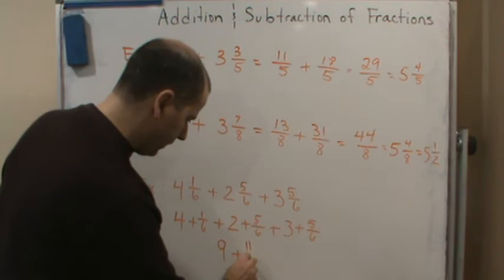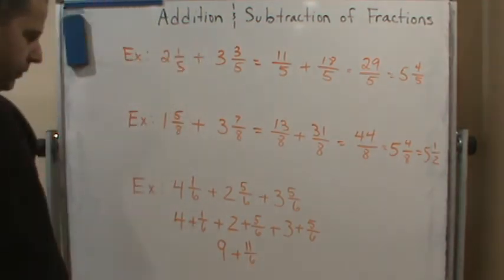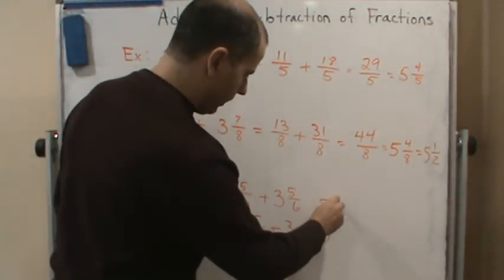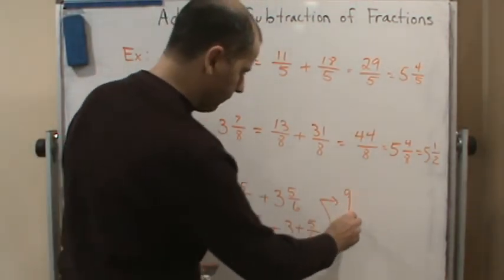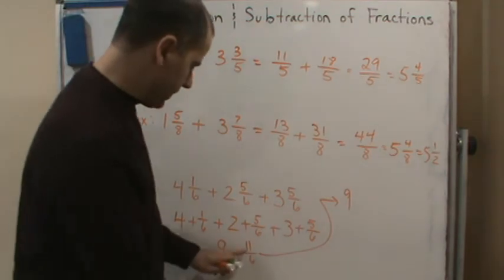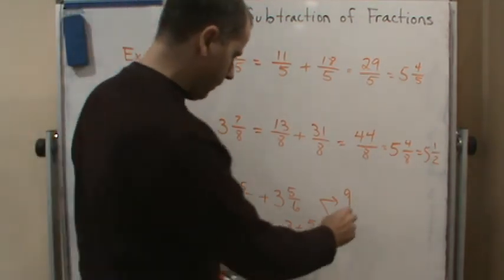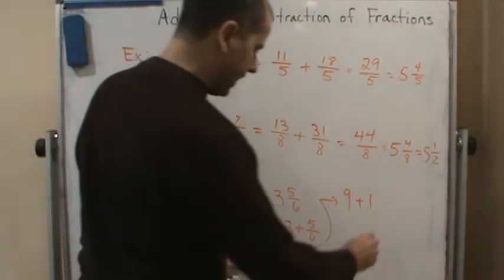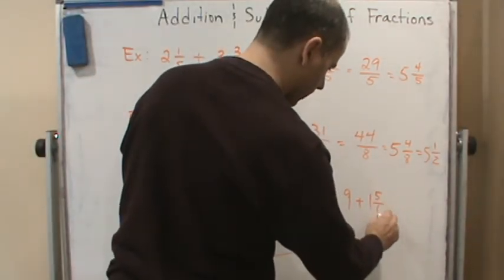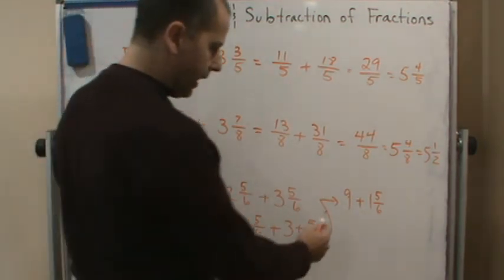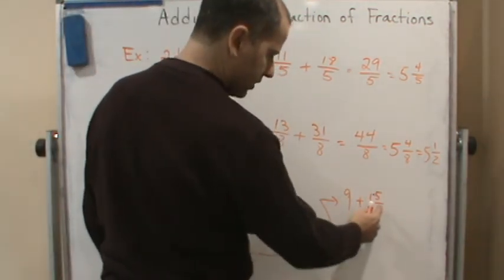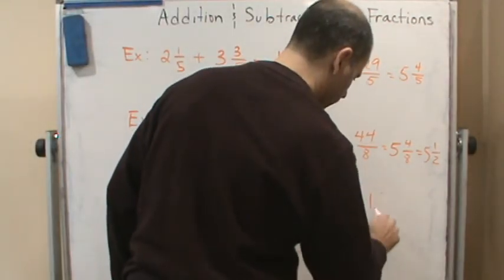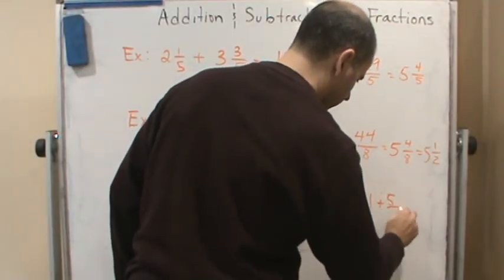So plus 11/6. Well, 11/6 is equal to what? So I can write this as 9... what's 11/6? 11/6 is 1 and 5/6. This is just a plus, so I can write this as 1 plus 5/6, and so the answer is 10 and 5/6.